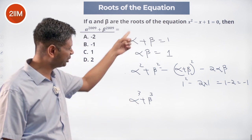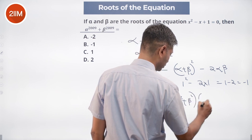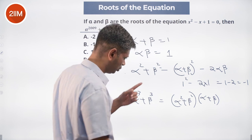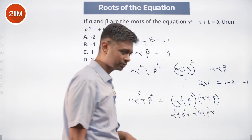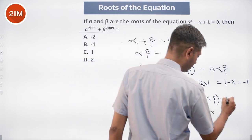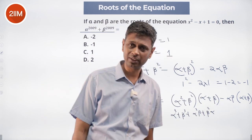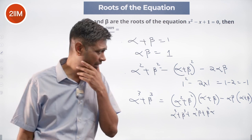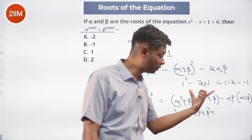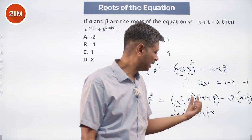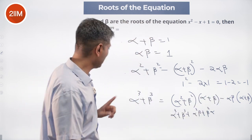Can we link alpha³ + beta³ to the previous terms? Consider (alpha² + beta²)(alpha + beta) = alpha³ + beta³ + alpha²·beta + alpha·beta². Subtracting alpha·beta·(alpha + beta) removes the cross terms, giving alpha³ + beta³ = (alpha² + beta²)(alpha + beta) - alpha·beta·(alpha + beta). Since alpha + beta = 1 and alpha·beta = 1, this equals alpha² + beta² - 1 = -1 - 1 = -2.